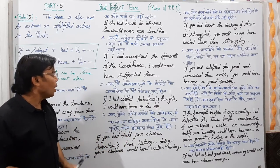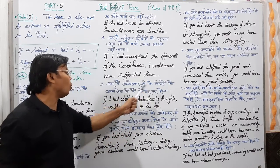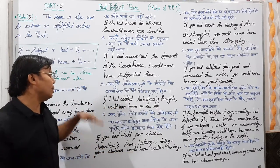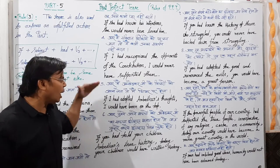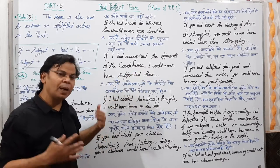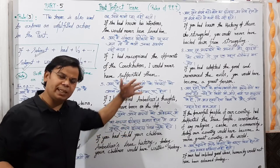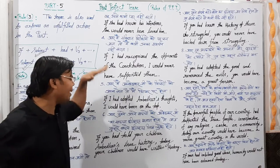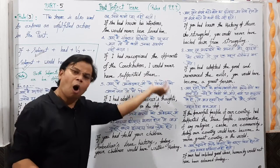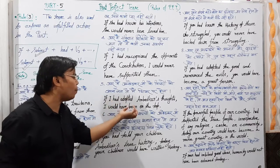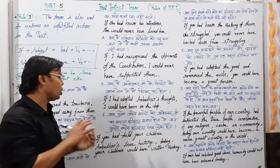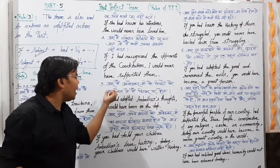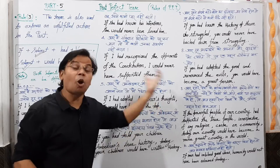Fifth example: अगर मैंने अम्बेडकर जी के विचारों को अपना लिया होता, तो मैं शिखर पर होता। English में: if I had adopted Ambedkar's thoughts, I would have been on the top। दूसरे तरीके से: I would have been on the top if I had adopted Ambedkar's thoughts।